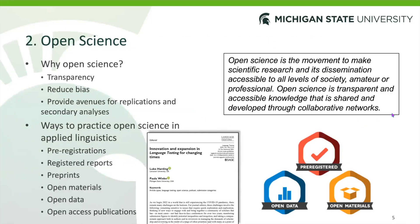Now moving on to open science. This is a really big topic in the field right now of applied linguistics — we've seen a lot published on this, and in language testing it's still growing within our field. Open science is a set of practices that aims to make science transparent and make our publications more accessible to others, not only other academics but also to the broader society in general. Open science encourages transparency in our practices. The aim is to reduce bias in our findings and also to provide avenues for replications and secondary analyses.